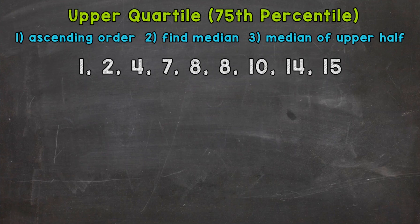So we have nine numbers within our data set here, and the first thing we always want to do is put the data in order from least to greatest, also known as ascending order. In this case, we are already in order, so we can move to the next step.